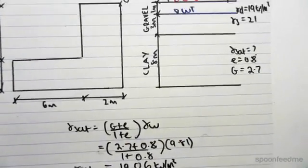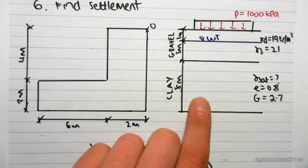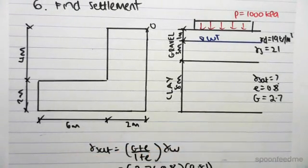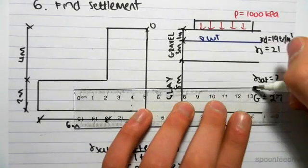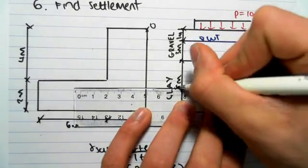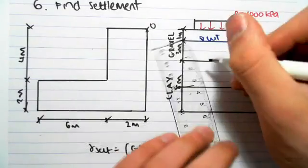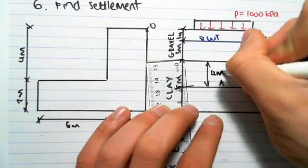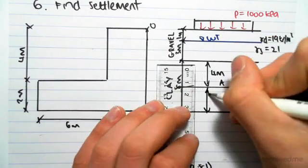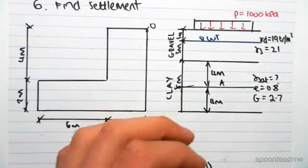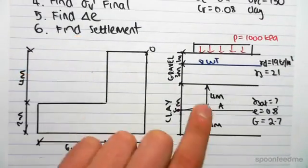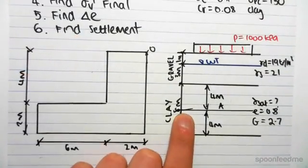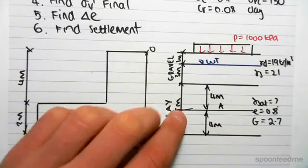So we can then use this information to find the effective stress in the clay layer. We know that when we're doing these types of questions we need to set the point we're interested in at the midpoint of the layer. So we're interested at a point A which is 4 meters because this subdivides the layer perfectly. Whenever we're doing settlement questions we know we need to split the layer and the distance we're interested in is the midpoint of the layer.